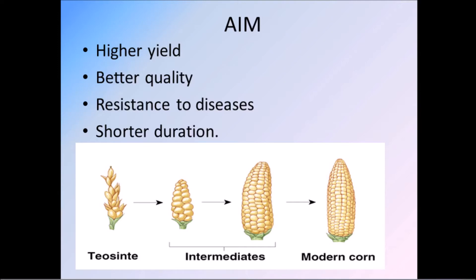The aim of crop improvement is to develop improved crop varieties with higher yield, better quality, resistance to diseases, and with shorter duration. You can see here maize with lesser quantity and underdeveloped grains, a well-developed grain with small quantity, and well-developed grains where arrangement is not proper — intermediates — and this is modern corn. Our aim is to produce higher yield, better quality, resistance to disease within shorter duration.